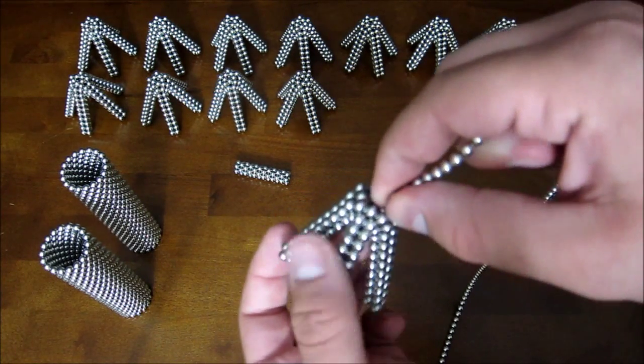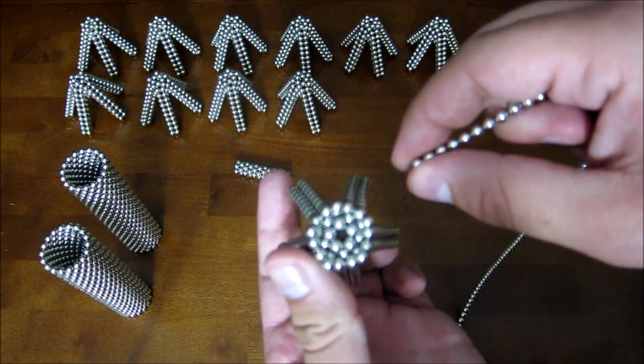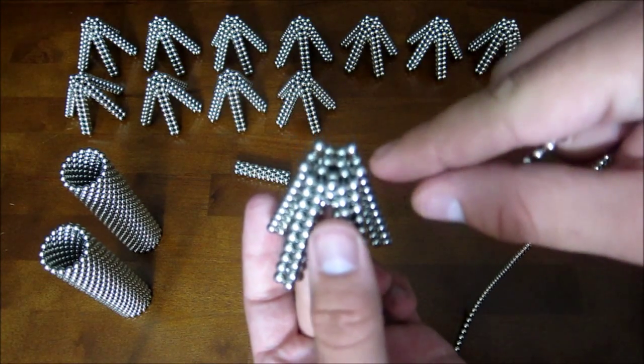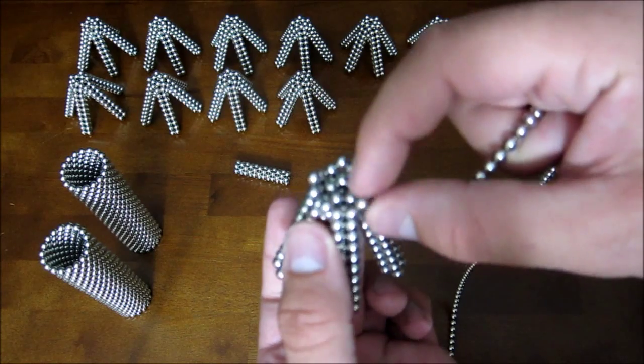And do it again, again, again, and again. Until you have this. And you see these 5 magnets around here are kind of wobbly and free floating.